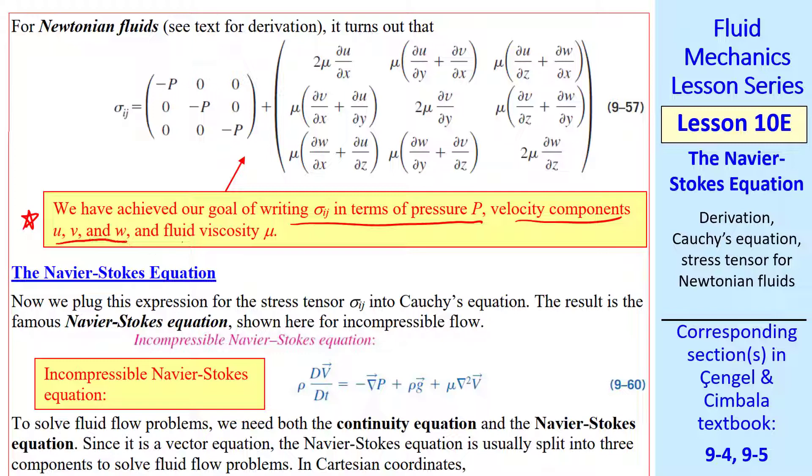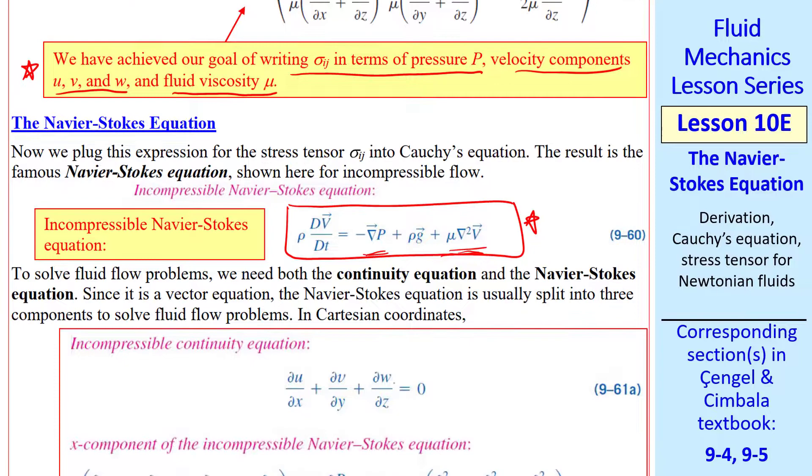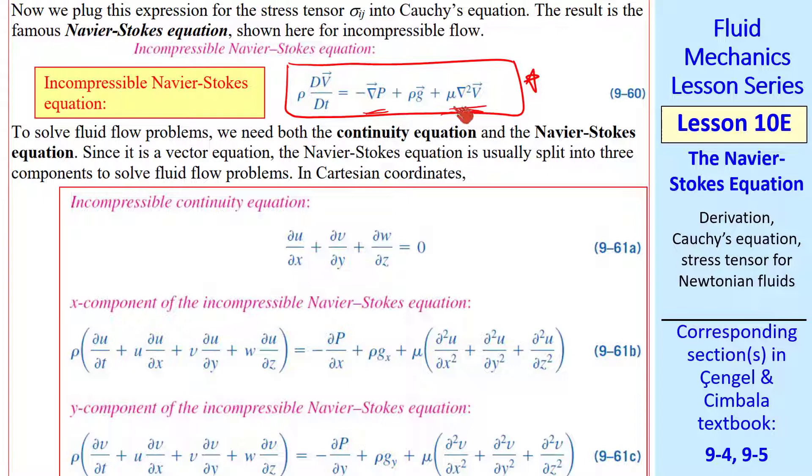Finally, we can derive the Navier-Stokes equation. We plug this expression for sigma ij into Cauchy's equation, and we get the famous Navier-Stokes equation. There's a compressible form, but here's the incompressible form. In vector form, the stress tensor gets split up into the gradient of pressure, and then this Laplacian term with viscosity. The Navier-Stokes equation is the most famous equation in all of fluid mechanics. To actually solve fluid flow problems, we also need the continuity equation. And since this Navier-Stokes equation is a vector equation, we typically split it into three components to actually solve fluid flow problems.